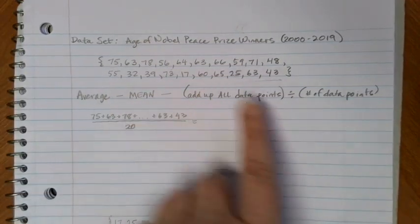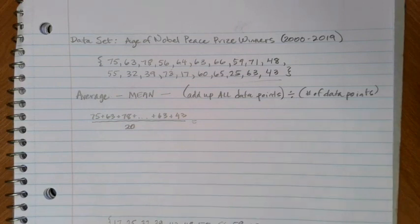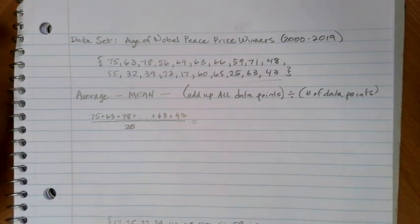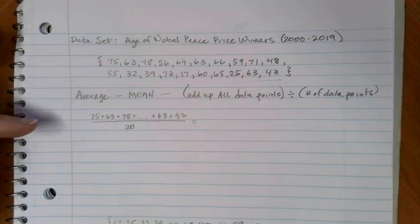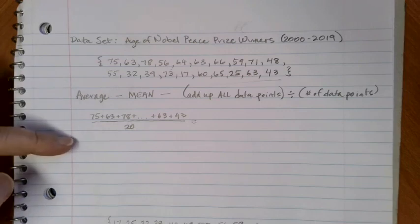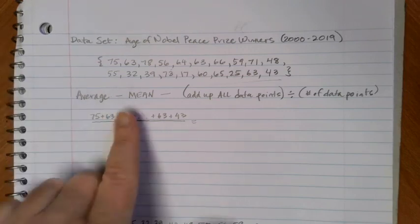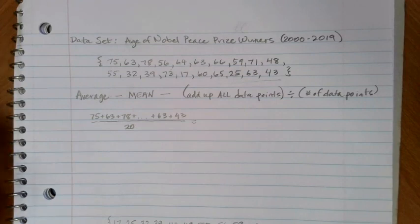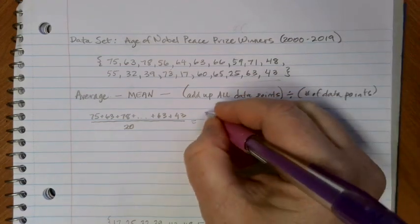Now this is a lot of numbers to add up, and we're going to be focusing in future videos on using technology to help us calculate these values in a quick fashion. But for now I want you to see where these different calculations come from and what these values mean when you see something like the mean. So with that, if I were to add all of these numbers up here, I came up with 1115.